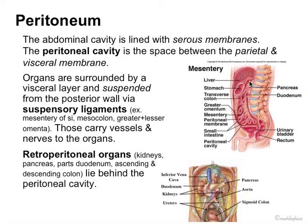It's a nice way of doing it, just a little more complicated to understand and get the labeling right. Here are some of the names: the suspensory ligaments are the mesentery of the small intestine, the mesocolon, and the greater and lesser omentum. You can see them labeled in this area here. The retroperitoneal organs are organs that lie behind the peritoneal cavity. They are not as protected as organs that lie within the peritoneal cavity. Those are the kidneys, the pancreas, parts of the duodenum, and the ascending and descending colon.